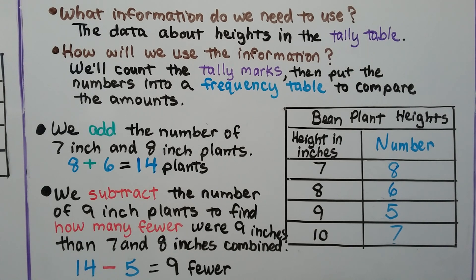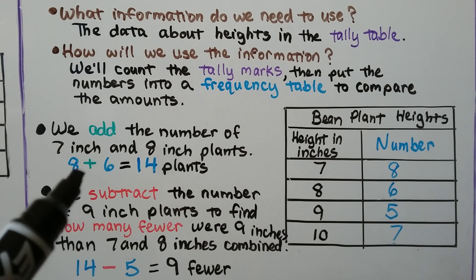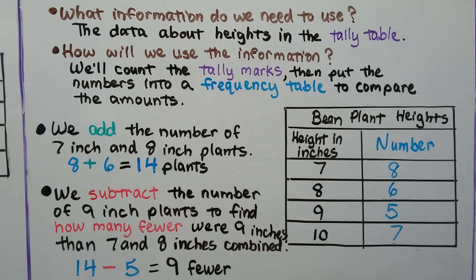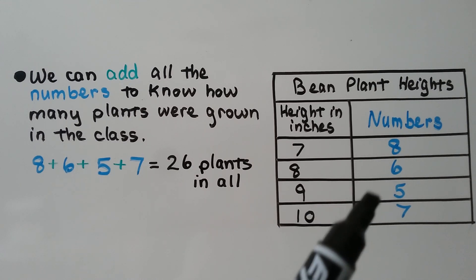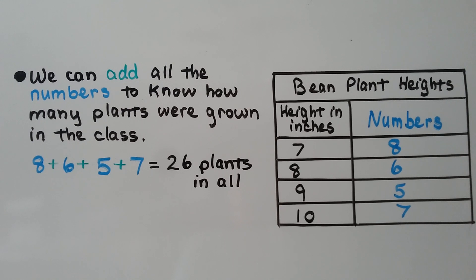We subtract the number of nine-inch plants — there are five of them — to find how many fewer were nine inches than seven and eight inches combined. Fourteen minus five equals nine fewer. Because the problem said seven or eight inches combined, we added those totals, then subtracted the nine-inch count from fourteen. We can also add all the numbers to know how many plants were grown: eight plus six plus five plus seven equals twenty-six plants in all.